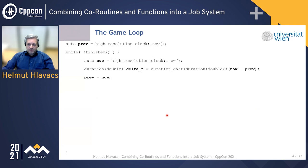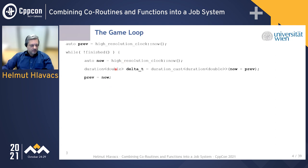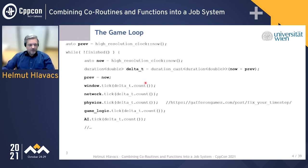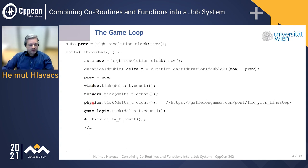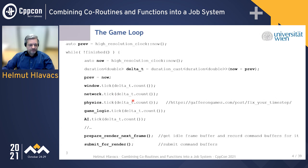Typically, a game runs in a so-called game loop. In every loop iteration you measure the time spent in the last iteration, saving it as a delta time. Then you advance your game state by calling all of the game subsystems: you ask the window about user events, ask the network, ask the physics engine to advance the simulation, the game logic, AI, and so on.